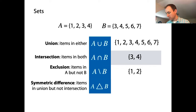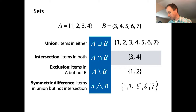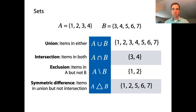The last one is the symmetric difference, which is the items that are in the union but not the intersection. Another way of saying that is: these are all the items that are in one set but not the other — in one set or the other, but not both. In this example, that would be 1 and 2 (in A but not B), then skipping 3 and 4 (those are in the intersection), and then 5, 6, and 7 which are only in B.